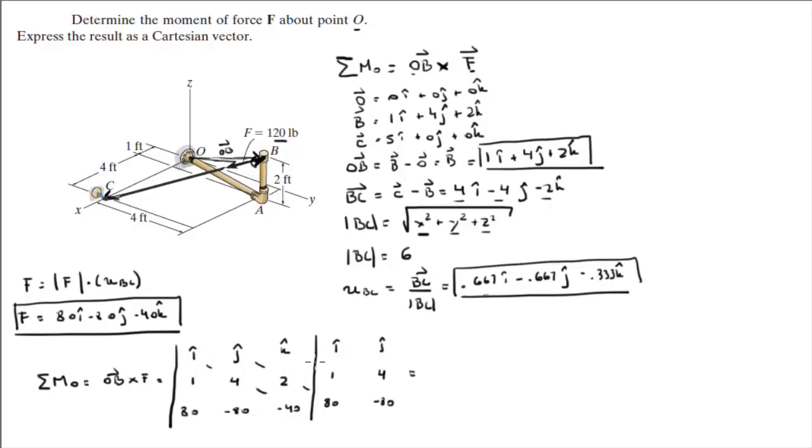And then you do your diagonals. So these are positive diagonals. Positive, positive, positive. So i times 4 times negative 40 is negative 160i. j times 2 times 80 is positive 160j. k times 1 times negative 80 is negative 80k.